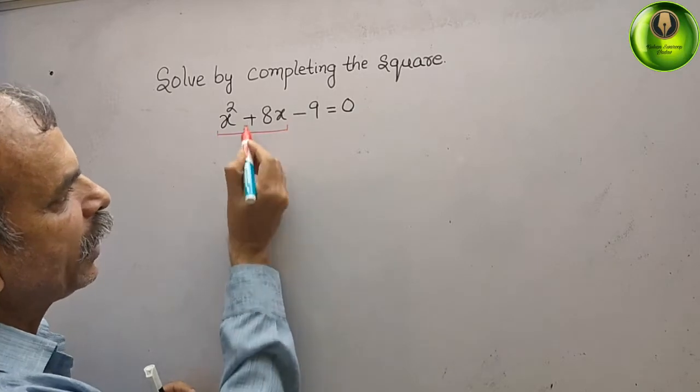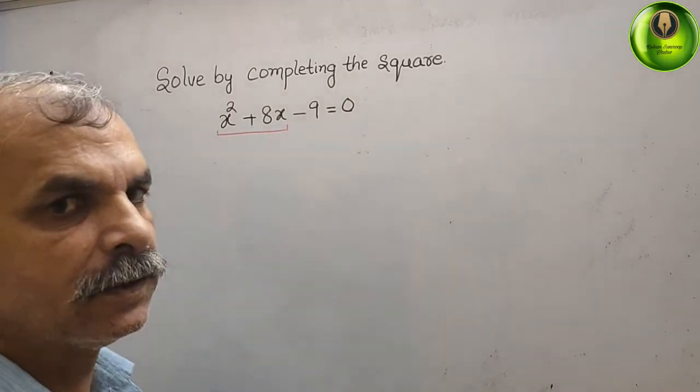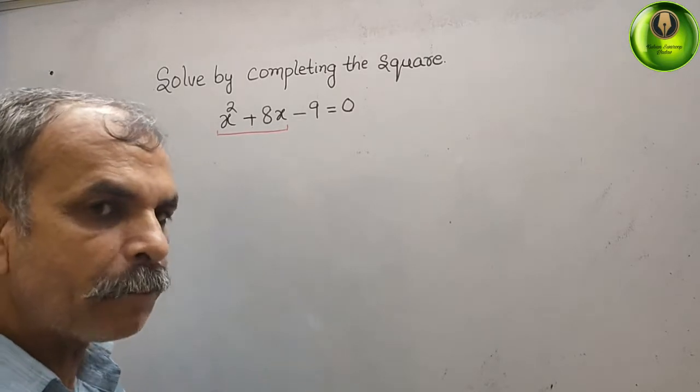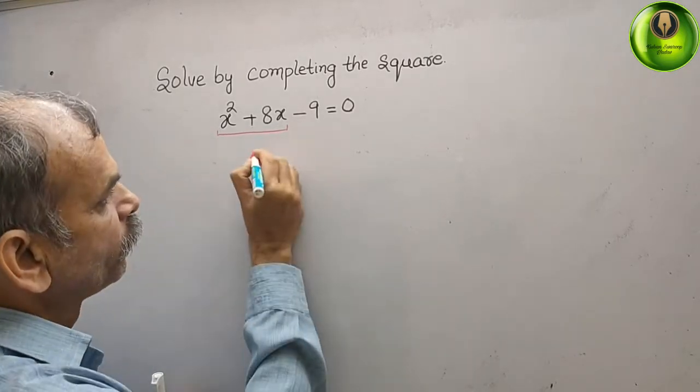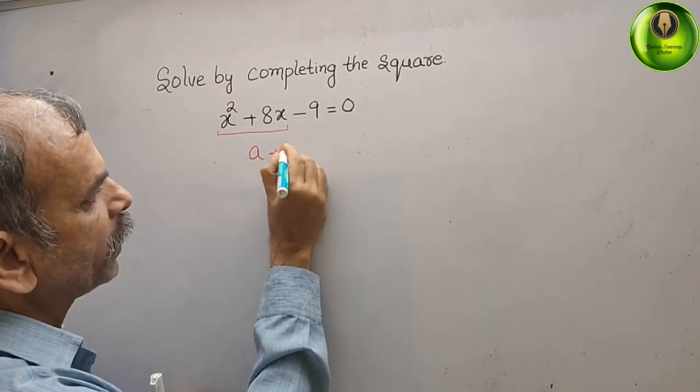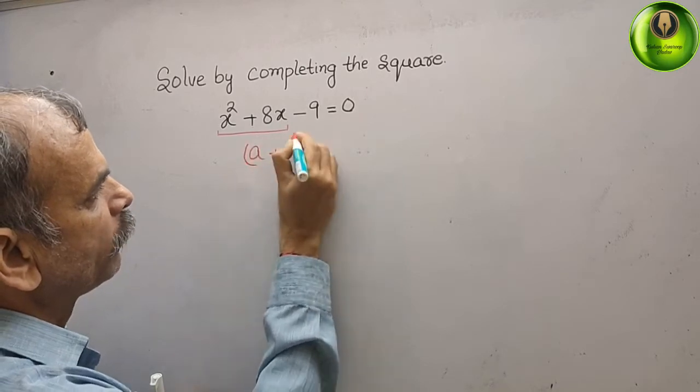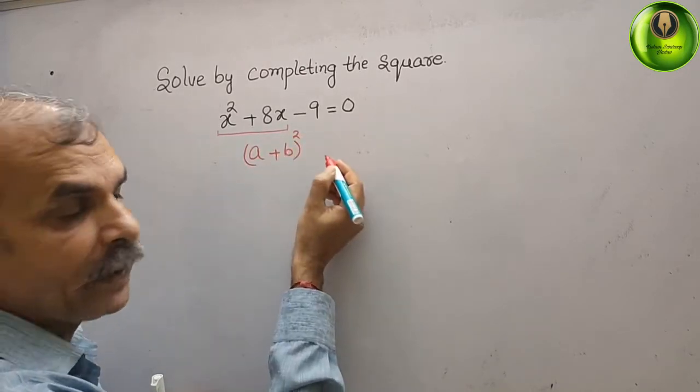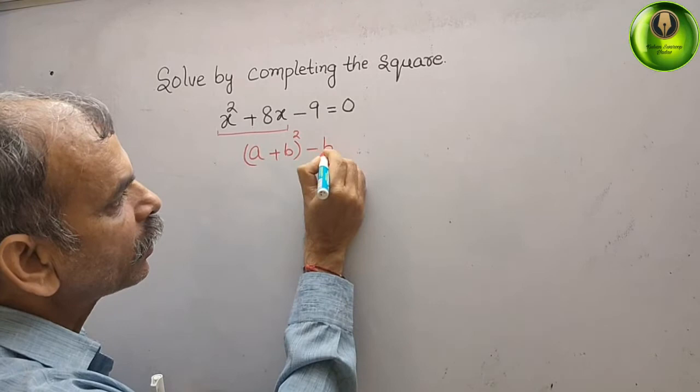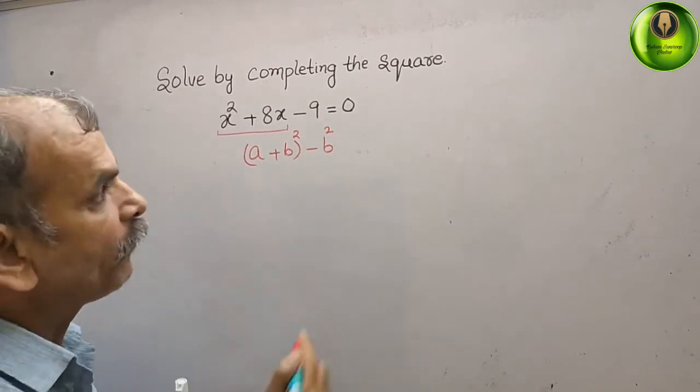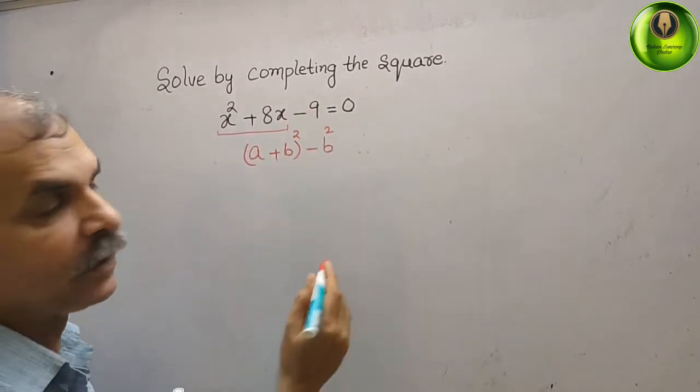So here they have given you plus, that means we have to make a plus b whole square. (a + b)² and we have to minus b² after that. Minus 9 is there, we will put here minus 9, that is equal to 0.